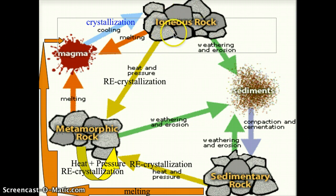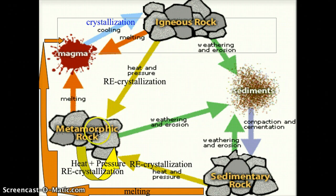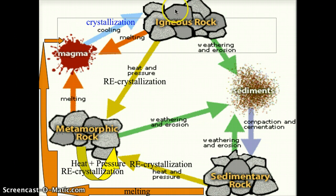Here's an example: igneous rocks. We can either weather and erode them into sediment, we can melt them into magma, or we could add heat and pressure and recrystallize them into metamorphic rocks. That's the only thing you can do to an igneous rock to change it from an igneous rock. Then think about the in-arrows: how do igneous rocks form? All igneous rocks form from magma that cools and crystallizes into an igneous rock. And now you're done with igneous rock.